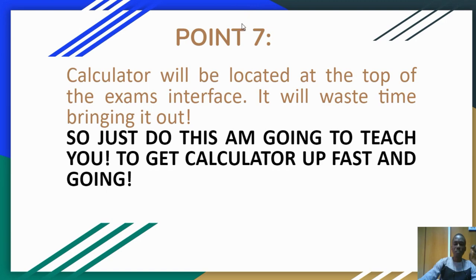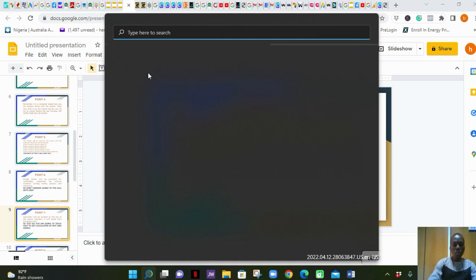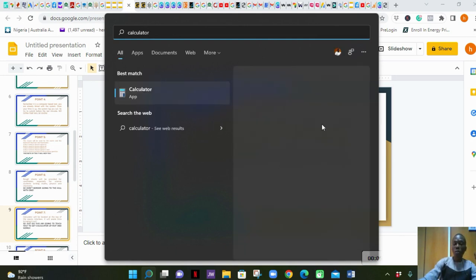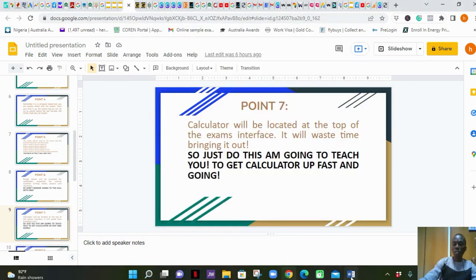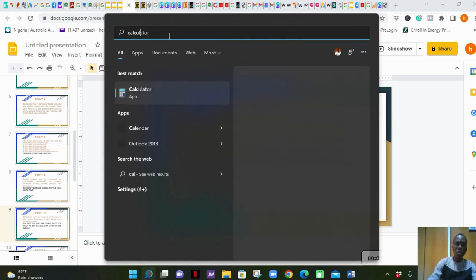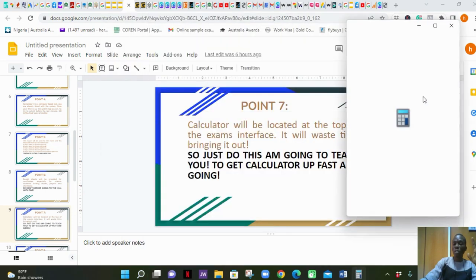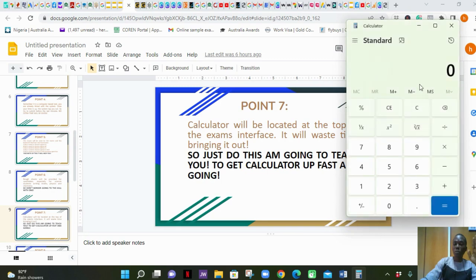Let me teach you the best way of getting your calculator. I'm going to minimize this. You come here in the search option of your computer and type 'calculator'. Once you type calculator, the calculator will come up. Click open, and the calculator will open. You'll see it on the screen. This is the best method because once you get your calculator on the screen, you can minimize it and call it faster when you need it.